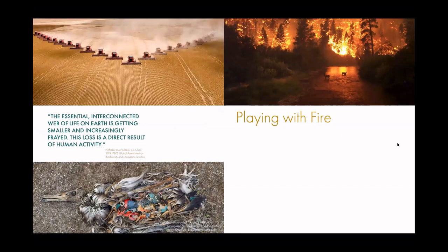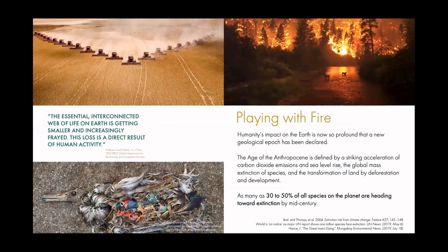The web of life on earth is becoming smaller and smaller, and it's directly a result of human activity. Our impact on the earth is now so profound that there's a new geological epoch that's been declared: the age of the Anthropocene. It's defined by many of the trends we've all witnessed — carbon emissions rising, sea level rising, the global mass extinction of species, and the transformation of land across the planet based on human development and large-scale agriculture. Currently, as many as 30 to 50 percent of all species on the planet are heading toward extinction in the next 20 or 30 years.